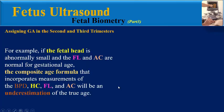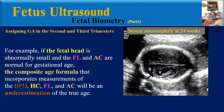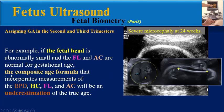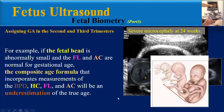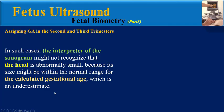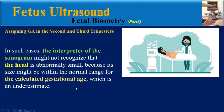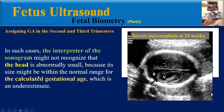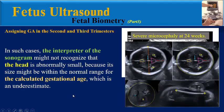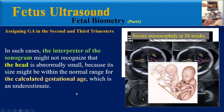For example, if the fetal head is abnormally small and the FL and AC are normal for gestational age, the composite age formula that incorporates measurements of BPD, HC, FL, and AC will be an underestimation of the true age. In such cases, the interpreter of the sonogram might not recognize the head is abnormally small because its size might be within the normal range for the calculated gestational age, which is an underestimate.